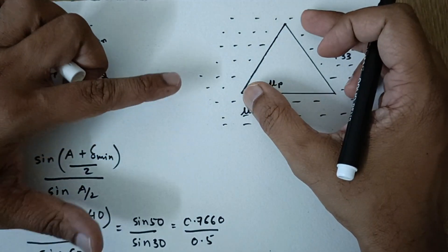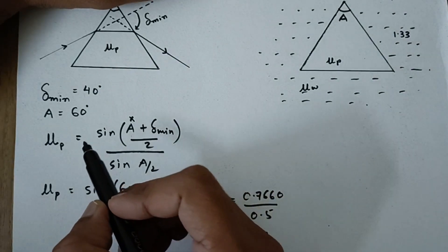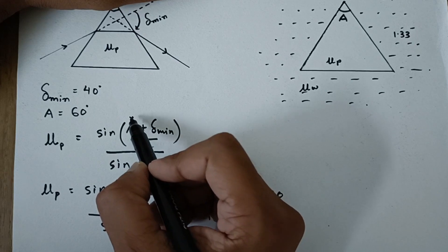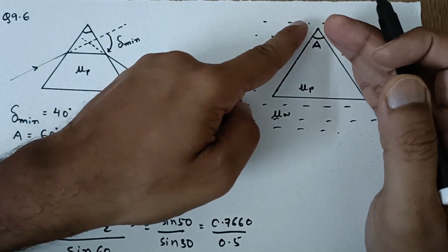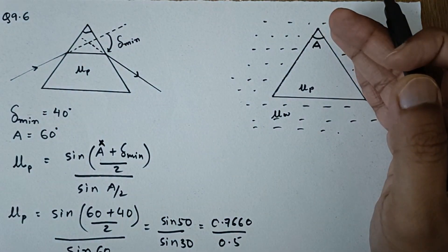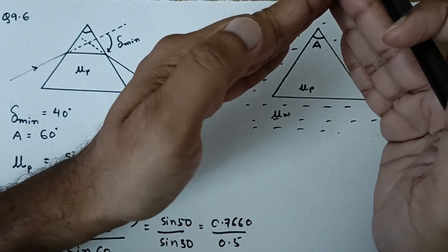Now the same prism is immersed in the water. So you have to understand this very carefully that you cannot change A because A is the angle of prism, which is the angle between two surfaces of the prism which are joined together. So this prism cannot be bent like this or this.